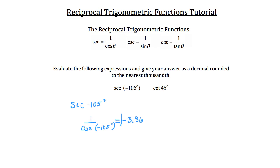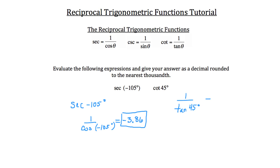Your calculator doesn't have a secant, cosecant, or cotangent button. You have to type it in as 1 over the regular trigonometric function — in the case of secant, 1 over cosine of the angle. Also, your calculator must be in degree mode for these problems. For cotangent of 45 degrees: 1 over the tangent of 45 degrees. Since tangent of 45 is 1, we get 1 over 1, which equals 1.